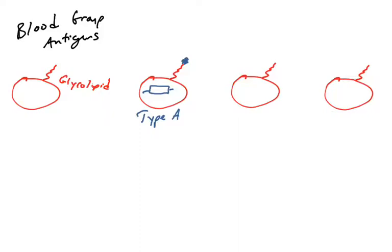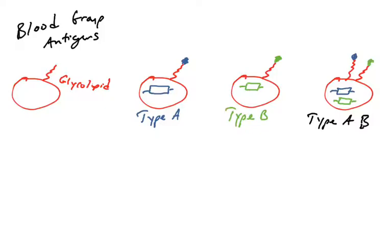All red blood cells have the same base glycolipid, but a type A individual's glycolipid is slightly different — they have an extra sugar on top. A type B individual inherits a version of the gene encoding an enzyme that puts a different sugar on the surface of the glycolipid. Some individuals inherit both versions of these genes and therefore have both types of glycolipids on their surface — they are heterozygous and have both type A and type B sugars.